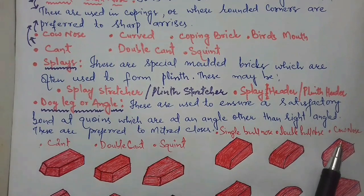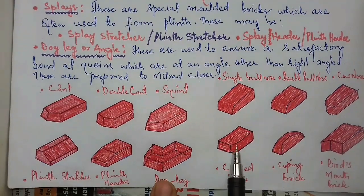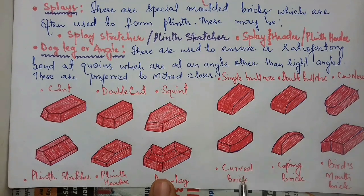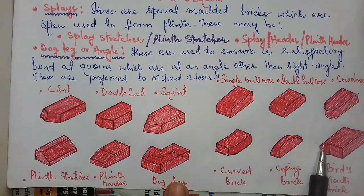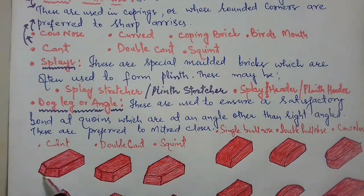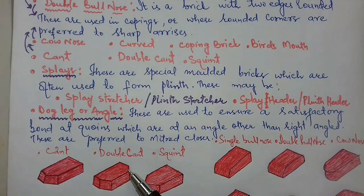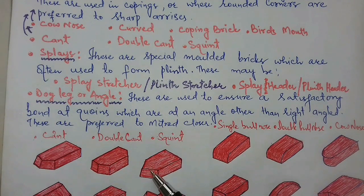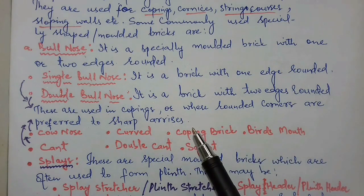Another one is cow nose — it resembles the nose of a cow, so it is called a cow nose brick. If you have a brick curved like this, you call it a curved brick. These are also coping bricks. If a brick has a bird's mouth-like structure, you can call it a bird's mouth brick. Another one is cant: if one header is shaped at an angle, you can call it a cant. If both headers are shaped this way, you can call it a double cant. There is also another type known as splay, as you can see in the diagram. These bricks are used in copings or where rounded corners are preferred to sharp arises.